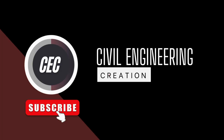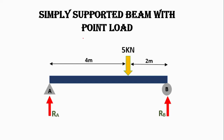Welcome to my YouTube channel Civil Engineering Creation. Today we will find the support reactions of a simply supported beam with a point load of 5 kilonewtons acting at 4 meters from A and 2 meters from B. We will find the support reactions RA and RB.